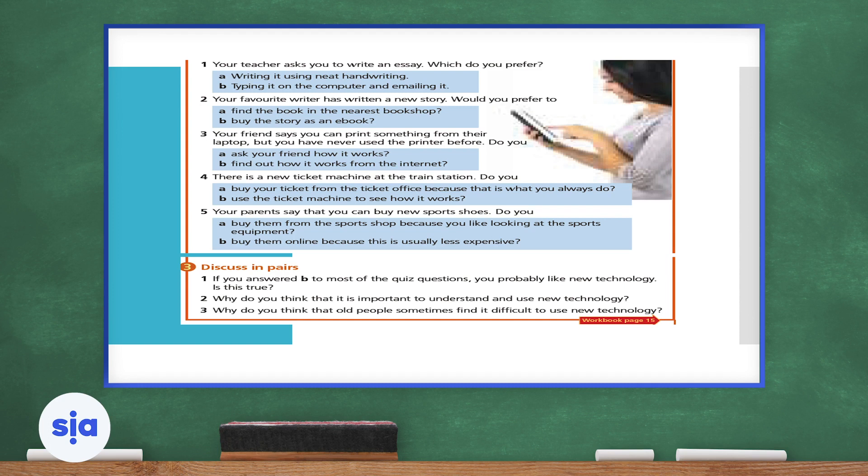Now let's move on to number four. There is a new ticket machine at the train station. Do you buy your ticket from the ticket office because it is what you always do? Or do you use the ticket machine to see how it works? I'll repeat number four. There is a new ticket machine at the train station. Do you buy your ticket from the ticket office because that is what you always do? Or do you use the ticket machine to see how it works? Choose one answer for question four. Let's jump to number five. Your parents say that you can buy new sports shoes. Do you buy them from the sports shop because you like looking at the sports equipment? Or do you buy them online because that is usually less expensive? Choose one answer for number five.